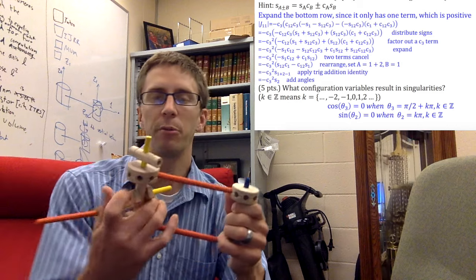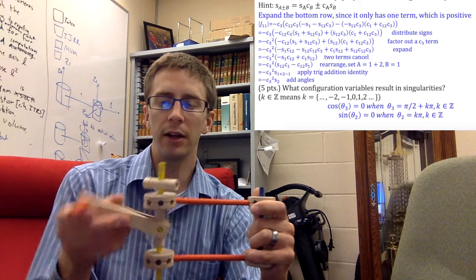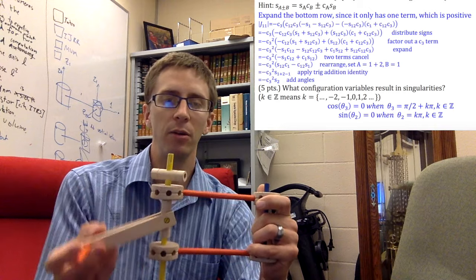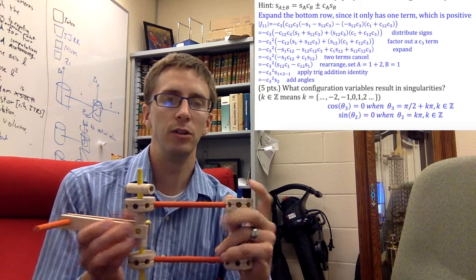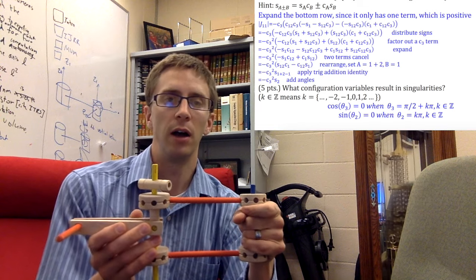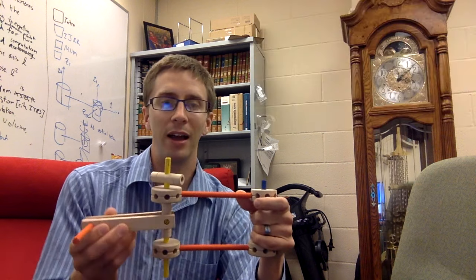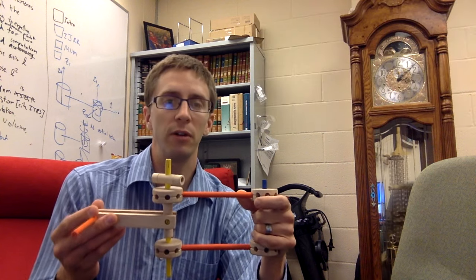But we also have a singularity when we're pointed straight out. Because I can generate a velocity up and down with this one, but rotations around joint 1 and around joint 2 produce the same velocity. So since these two are aligned, we have lost one degree of freedom.